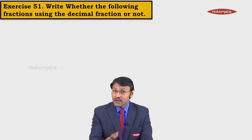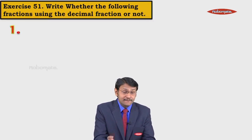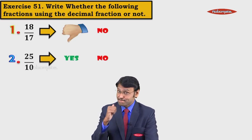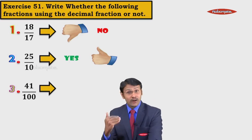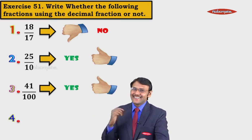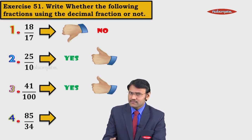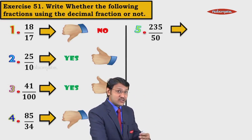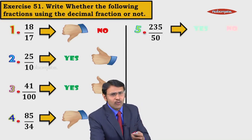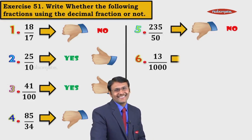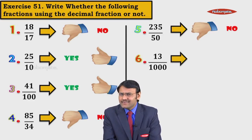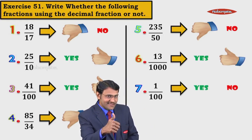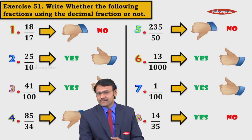From exercise 5.1, write whether the following fractions are decimal fractions or not. First is no. Next is 25 upon 10 — yes. Then we have 41 upon 100 — of course yes. Next 85 upon 34 — no. Fifth is 235 upon 50 — no. 13 upon 1000 — yes. Next 1 upon 100 — yes. 14 upon 35 — no.